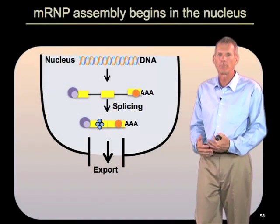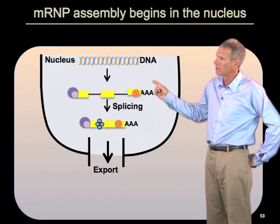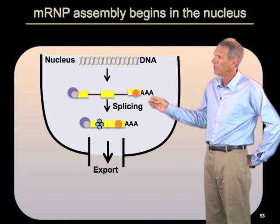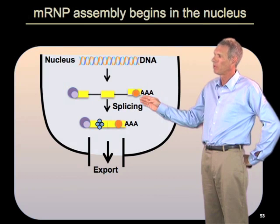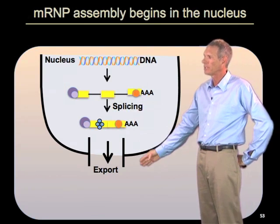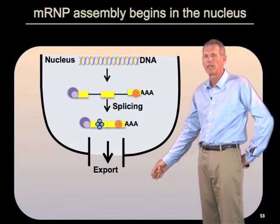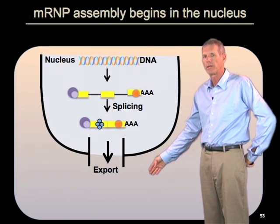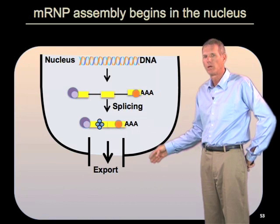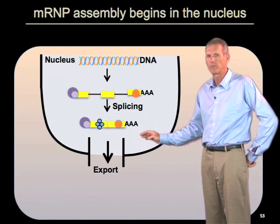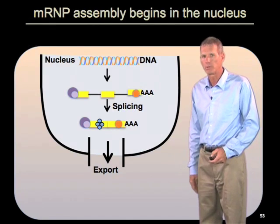First is that mRNA assembly begins in the nucleus. Many RNA binding proteins are imported into the nucleus, assembled with the nascent transcript, and then exported with the RNA out into the cytoplasm. As we study more and more proteins that bind to mRNA, this is becoming a common theme, where many factors are loading on the message in the nucleus, probably as the RNA is being produced co-transcriptionally.